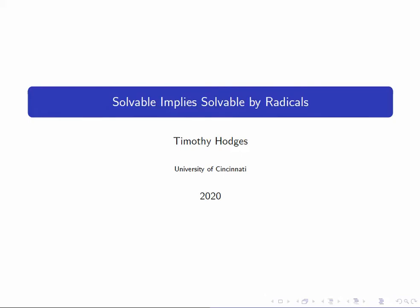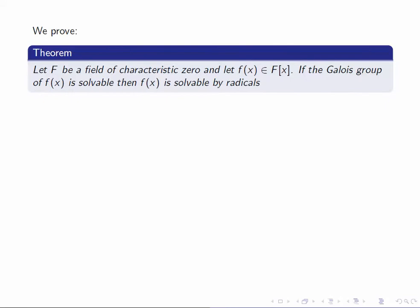Previously, we've seen that if a polynomial is solvable by radicals, then its Galois group must be solvable. Today, we're going to look at the converse, namely that if F has a solvable Galois group, then it must be solvable by radicals. In other words, its roots are expressible by radicals — they're contained in a radical extension of the base field F. Recall that F throughout will be a field of characteristic zero.